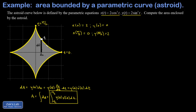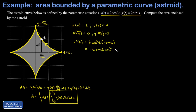One tricky point is the directionality of the parametric curve — it goes from (2,0) toward (0,2), meaning dx is negative. We need to fix that when setting up the integral. Computing x'(t) using the chain rule: differentiate the cosine cubed, bring down the 3, subtract one from the exponent, then multiply by the derivative of cosine, which is −sin t. That gives x'(t) = −6 sin t cos²t, which is negative in the first quadrant.